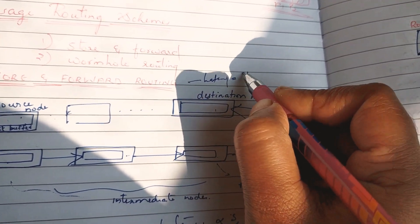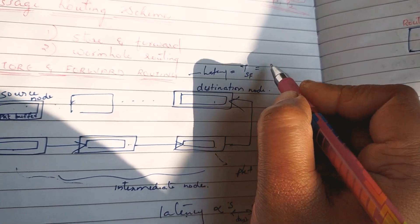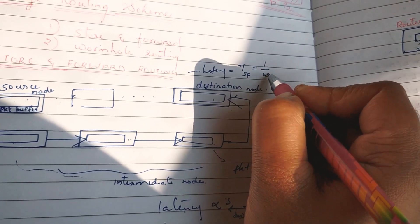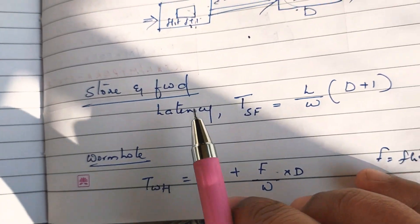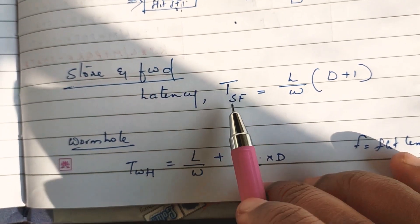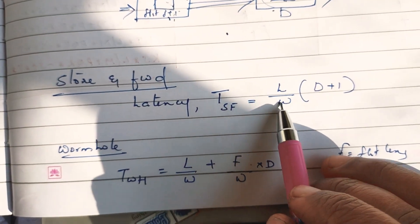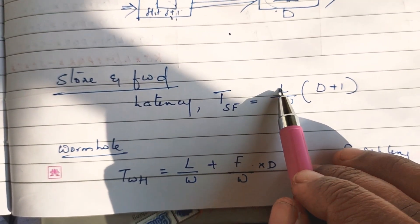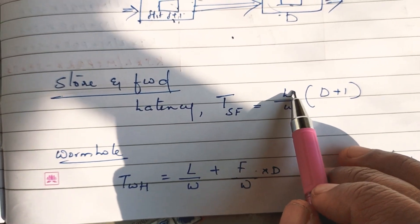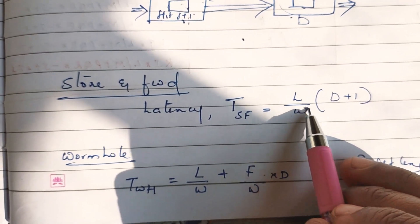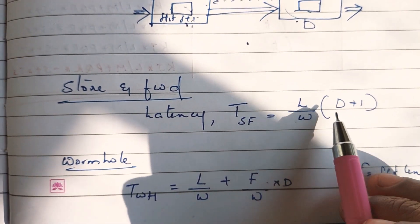The store-and-forward latency T_SF is equal to (L / W) × (d + 1), where L is the packet length, W is the channel bandwidth, and d is the distance between source and destination.